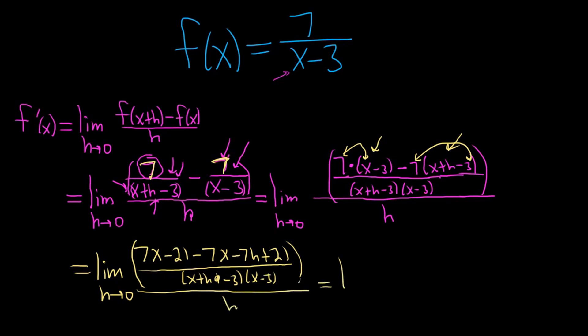So this is equal to the limit—let's clean this up—as h approaches 0. So the 7x's cancel. The 21's cancel. So we have negative 7h over x plus h minus 3 times x minus 3, and this is in parentheses, and it's all divided by h.